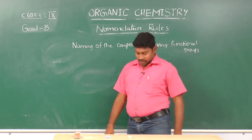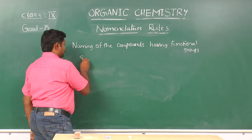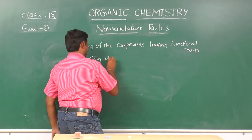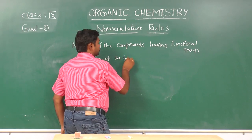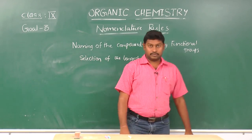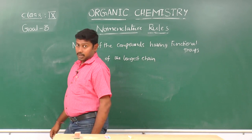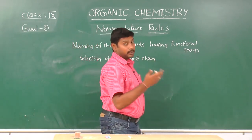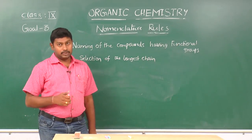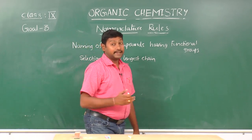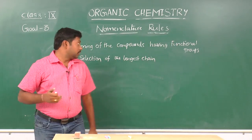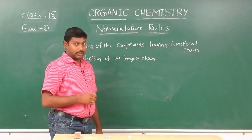The first rule is selection of the longest chain. We should select the longest continuous carbon chain in such a way to include the maximum number of functional groups. Let us see one example.